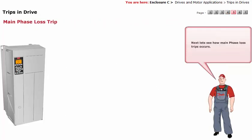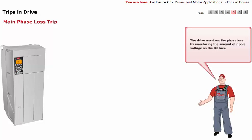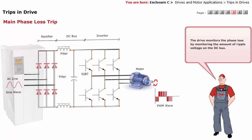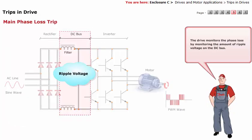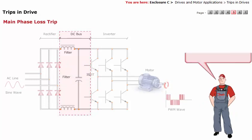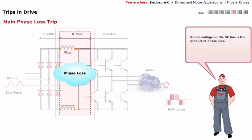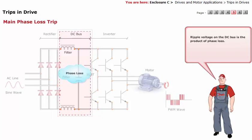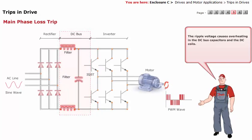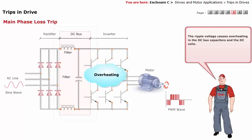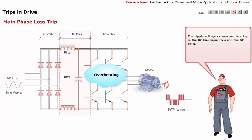Next, let's see how main phase loss trips occur. The drive monitors the phase loss by monitoring the amount of ripple voltage on the DC bus. Ripple voltage on the DC bus is the product of phase loss. The ripple voltage causes overheating in the DC bus capacitors and the DC coils.